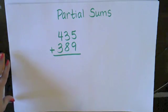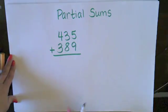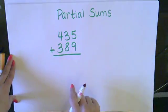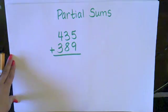Okay, now we're going to do an addition strategy called partial sums. You can see the word part in partial. Partial sums is where we're adding up the parts of the number or the place values to get our total or our sum.